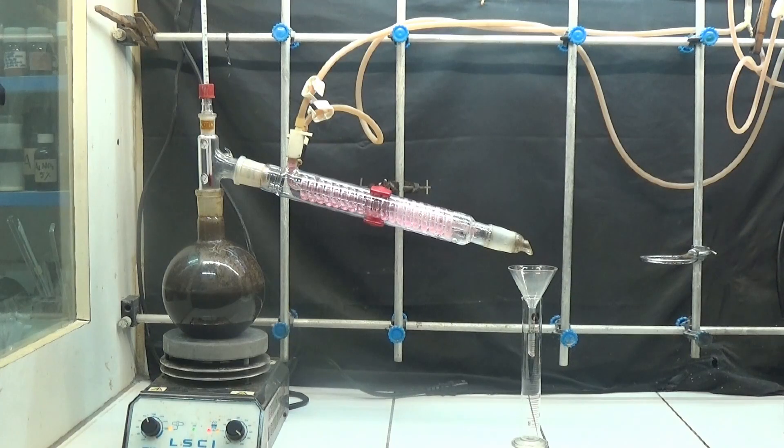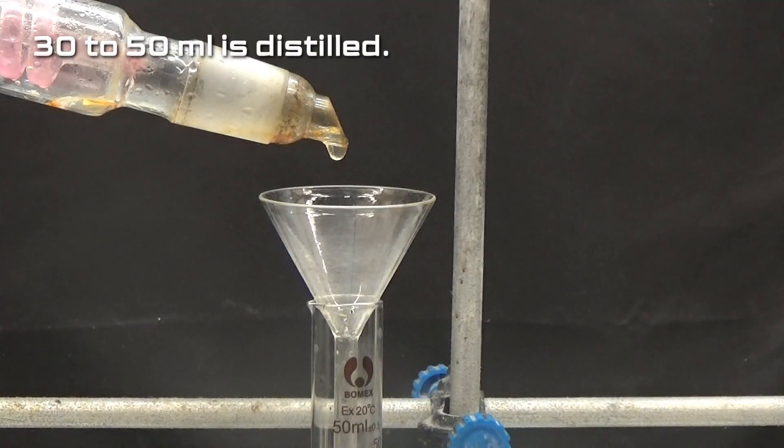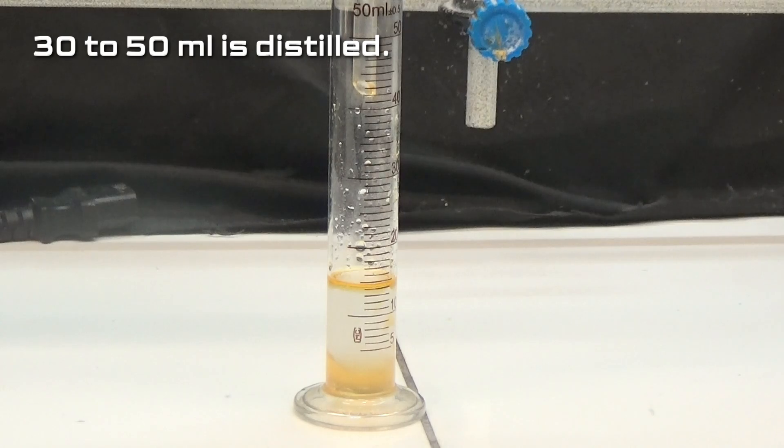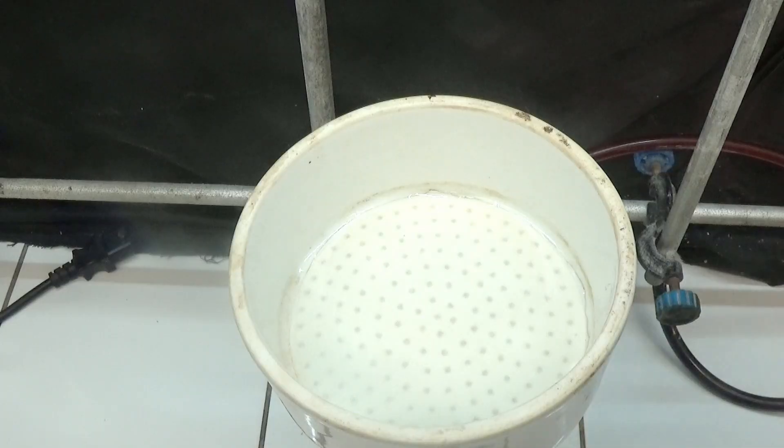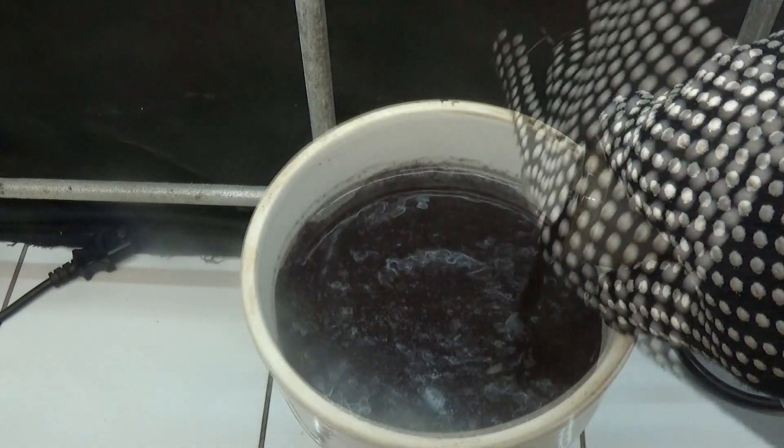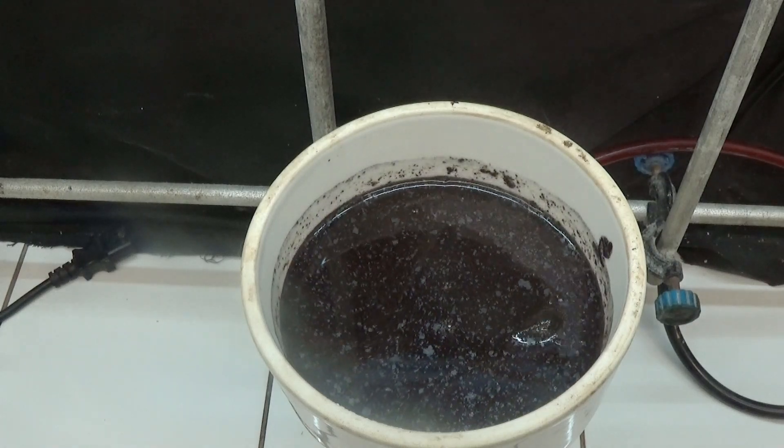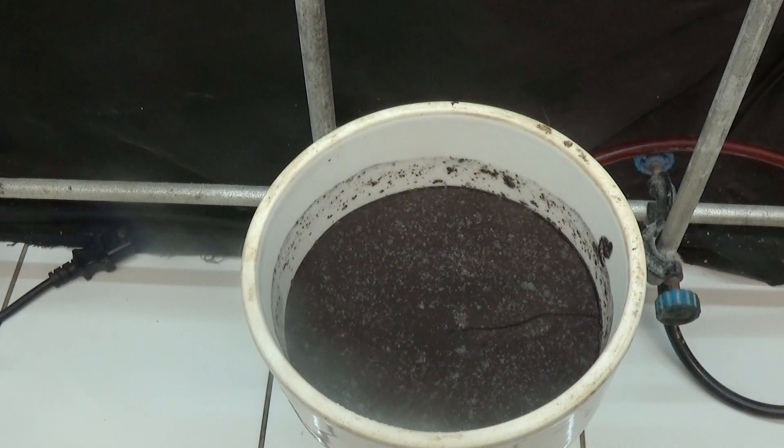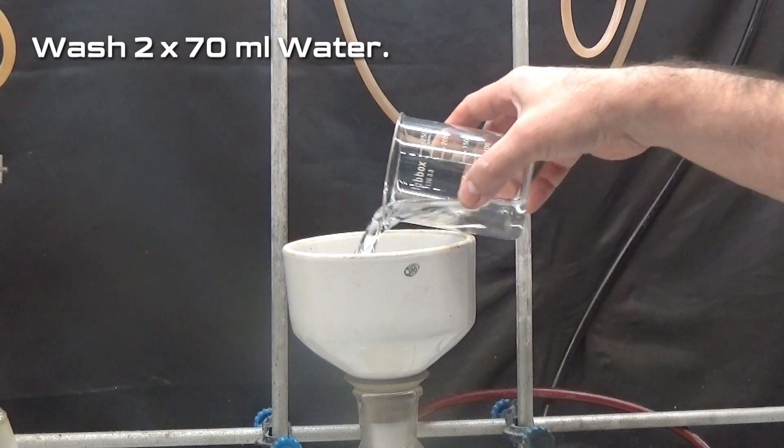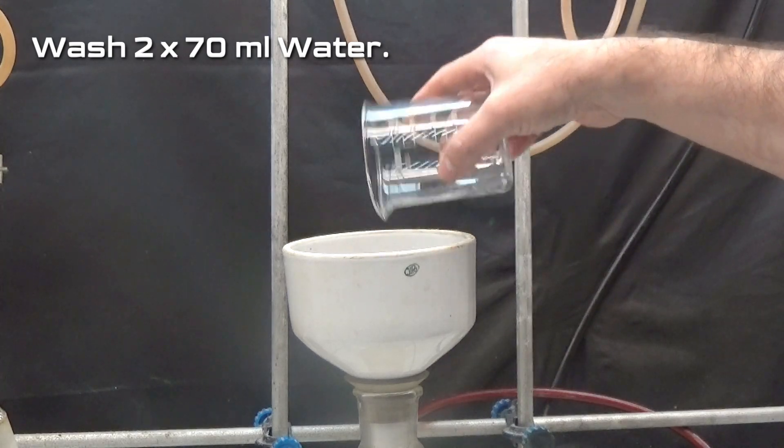After this reflux time a distillation apparatus is set up and a volume of 30 to 50 milliliters is distilled. This is done to remove the unreacted chlorotoluene. The distillate is discarded. Filter the still warm contents of the 1000 milliliters flask through a Buchner funnel with filter paper. Wash the solid twice with 70 milliliters of water.